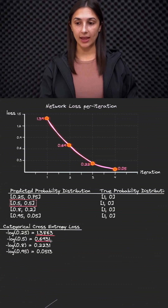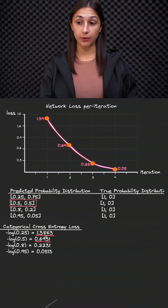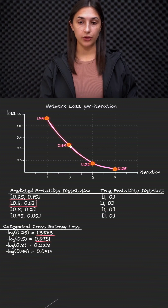With this marginal improvement, we now see that the loss value has decreased from 1.38 to 0.69. And on our graph here, that corresponds to this point.